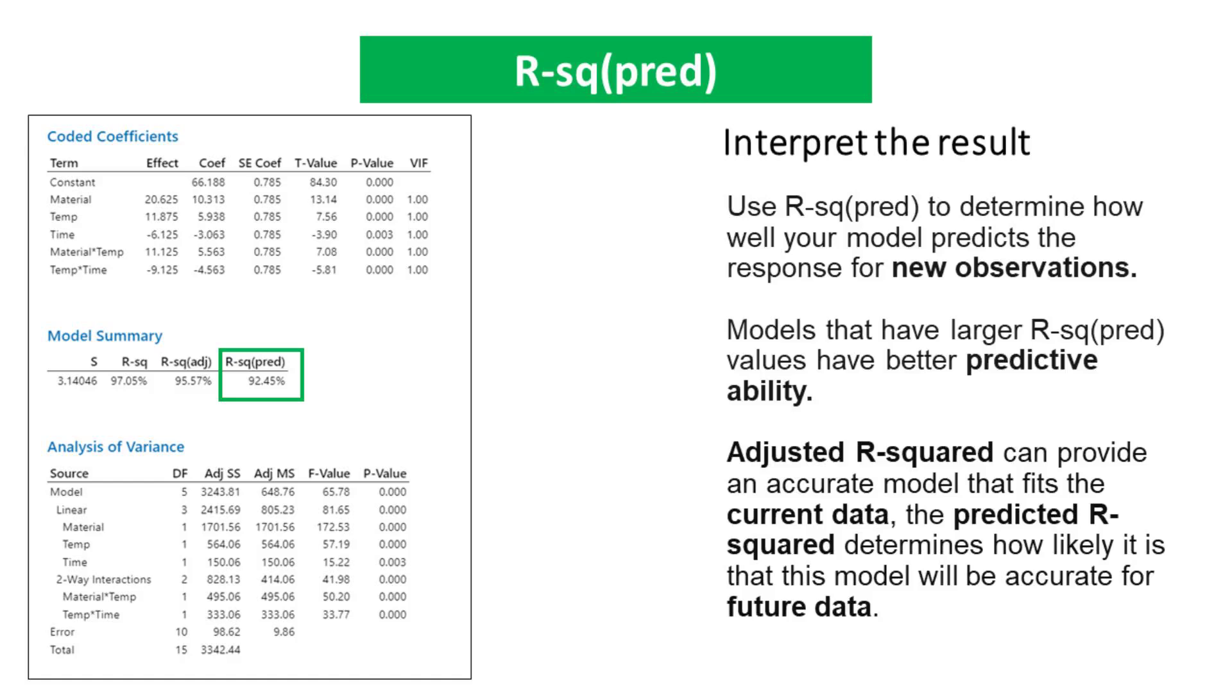When evaluating the predictive ability of a model, R-squared predicted is a valuable metric to consider. A larger R-squared predicted value indicates that the model has better predictive ability for new observations. However, it's important to also consider the adjusted R-squared value. While the adjusted R-squared value helps to provide an accurate measure of how well the model fits the current data, the predicted R-squared value goes a step further by indicating how likely it is that the model will be accurate for future data.